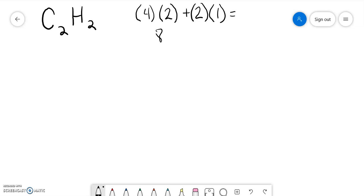This ends up being eight, this ends up being two. Eight plus two is ten. So our total number of valence electrons is ten. That's what we have to work with in this Lewis structure.